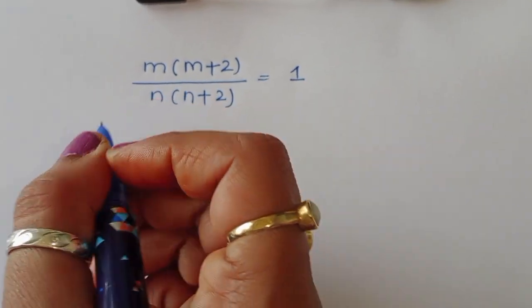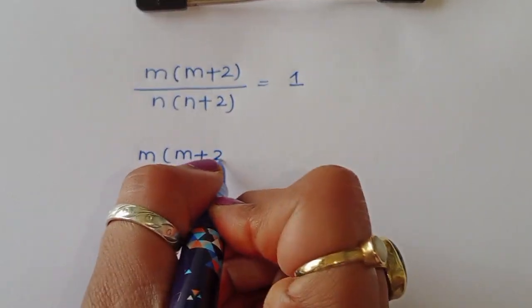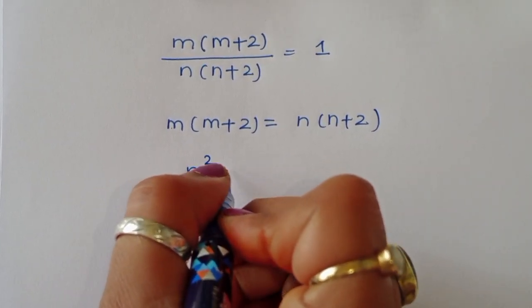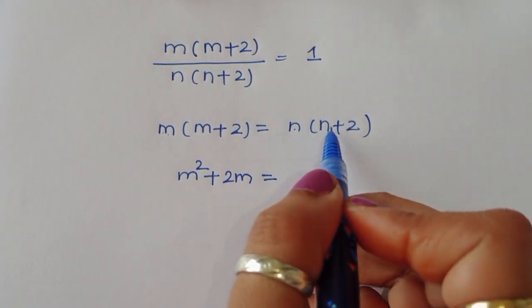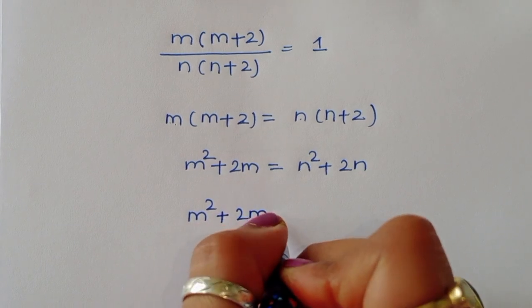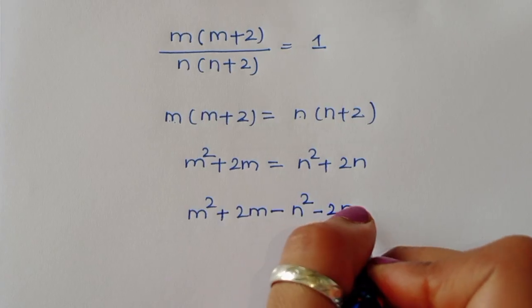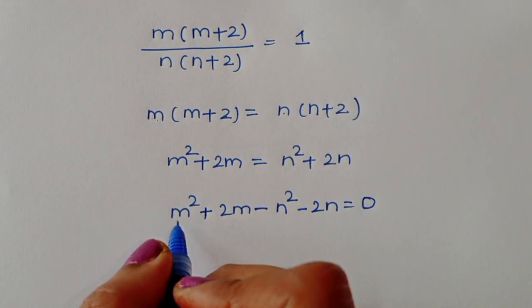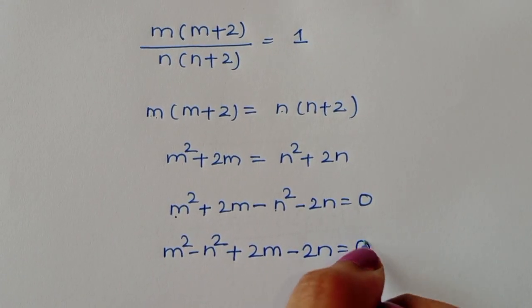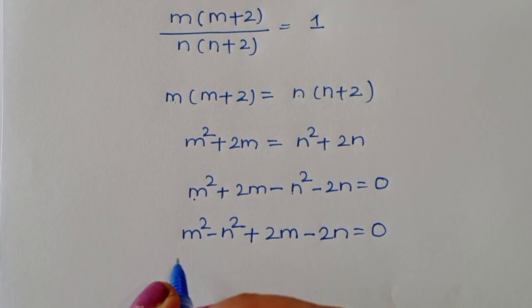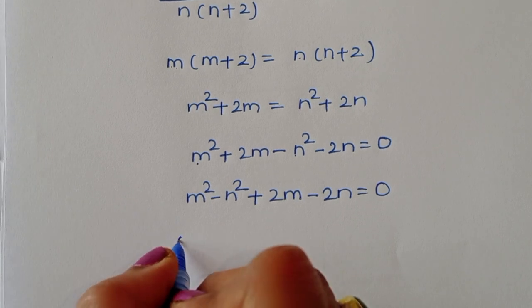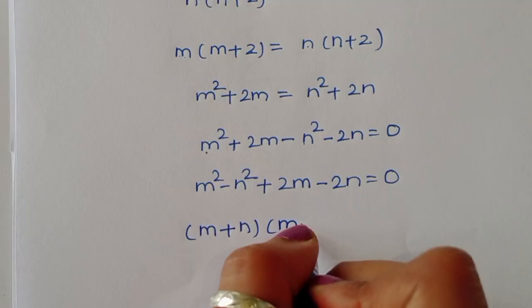By cross multiplication: m(m+2) = n(n+2), so m²+2m = n²+2n. Rearranging: m²-n²+2m-2n = 0. Using the difference of squares formula, a²-b² = (a-b)(a+b), we get (m-n)(m+n)+2(m-n) = 0.